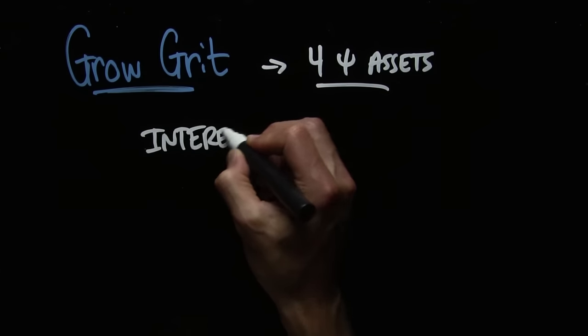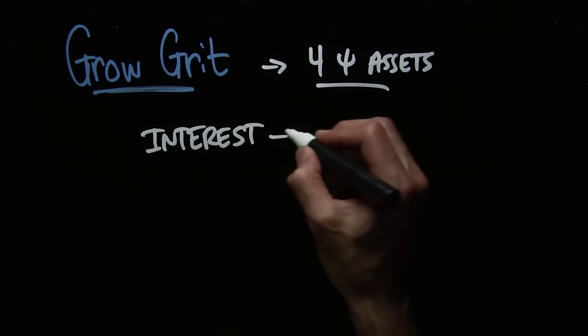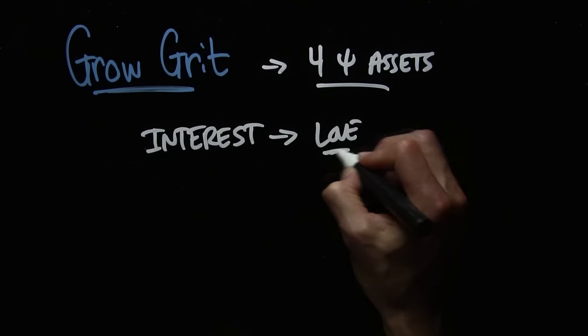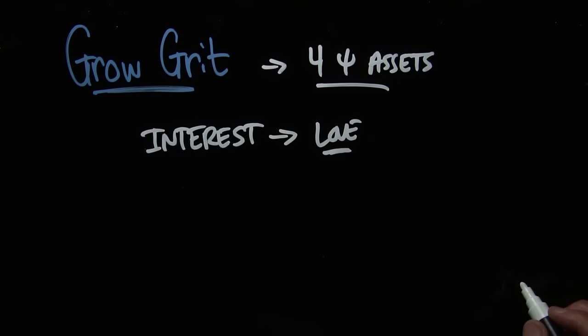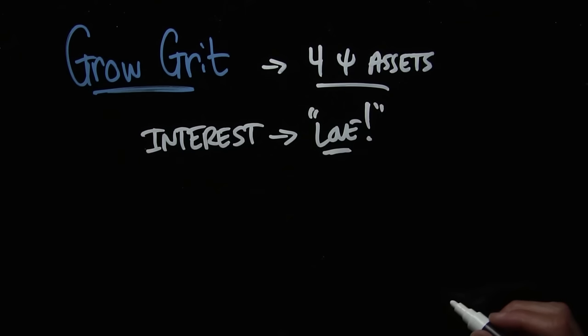One, interest. If you're feeling bored, you need to check in and say, do I really love what I'm doing? She says all the grit paragons she studied basically say, I love what I do. I don't kind of sort of like it. I certainly don't hate it. I love what I do. When you have that level of intense interest and passion, you don't tend to get bored.